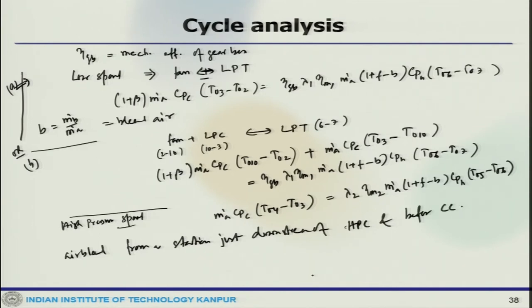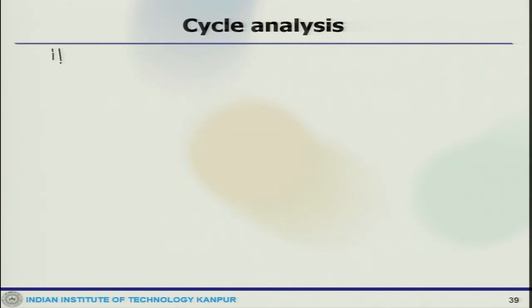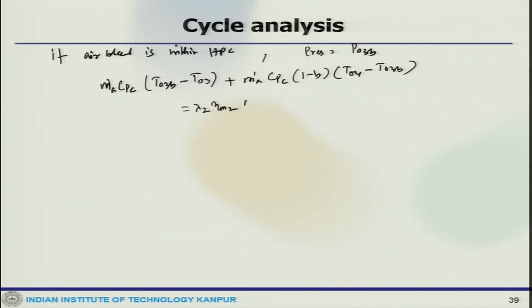In the other case, if the air bleed is from a station within the HPC, the pressure would be identified as P03B. Then the energy balance of the high pressure spool would give: m_dot_a*Cp_c*(T04-T03B) = lambda_2*eta_M2*m_dot_a*(1+F-B)*Cp_H*(T05-T06).